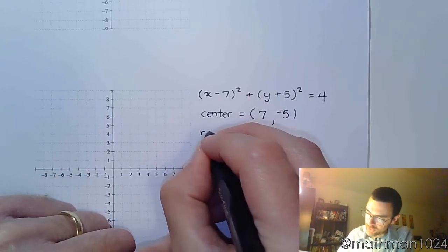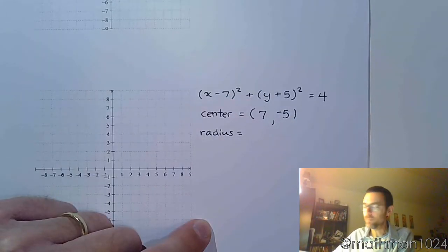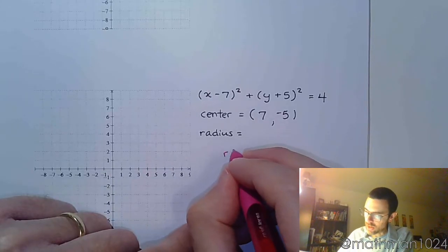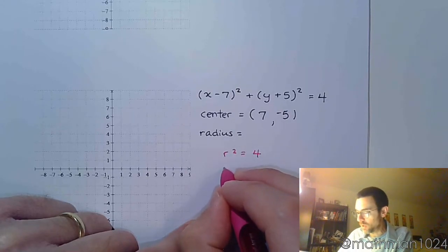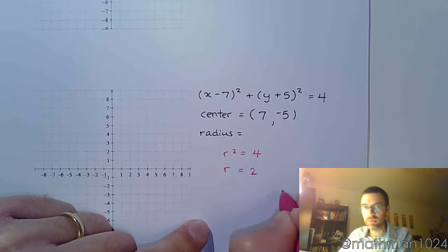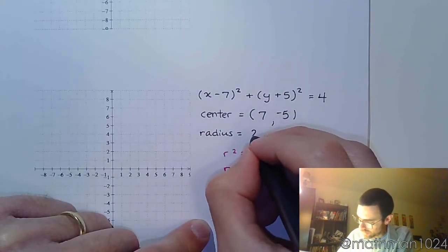And then we just need to identify the radius. And we're going to be done, right? So again, r squared is the constant that's on the right, 4. Which means that r is equal to 2. So my radius is 2.